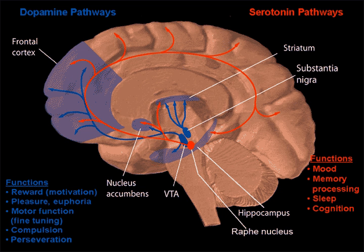Both of these fields are closely connected, since both are concerned with the interactions of neurotransmitters, neuropeptides, neurohormones, neuromodulators, enzymes, second messengers, co-transporters, ion channels, and receptor proteins in the central and peripheral nervous systems.